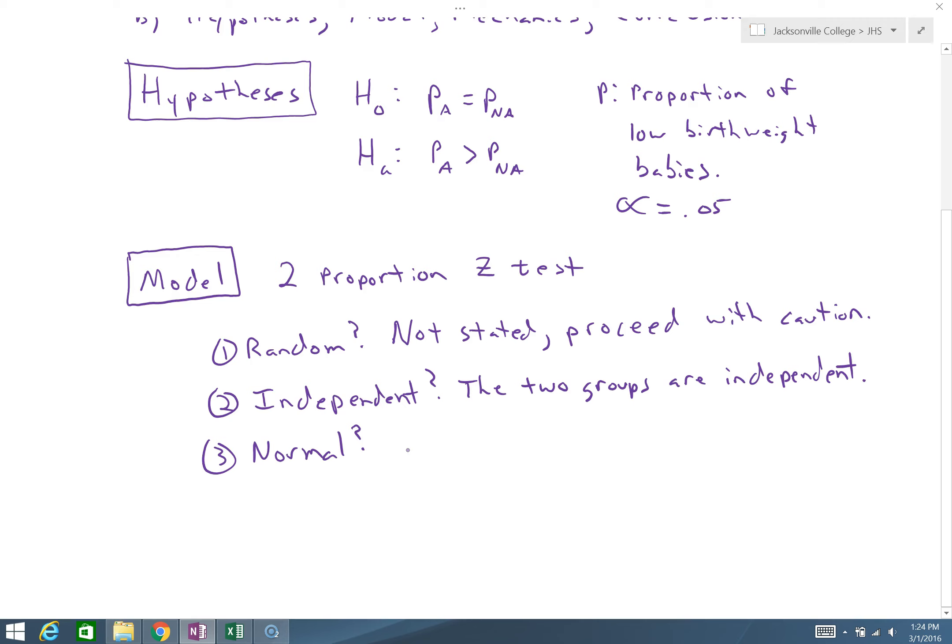Normal. Well, our previous normal condition was our n times p hat greater than or equal to 10, and n times the complement greater than or equal to 10. Now we have two different groups, and we need those all to be bigger than 10. So we need to say that our n for our air pollution group times that particular p hat is greater than or equal to 10, and the complement, I'm going to call that one q.